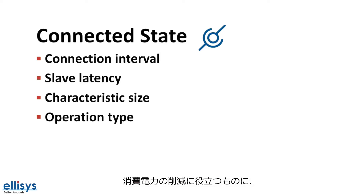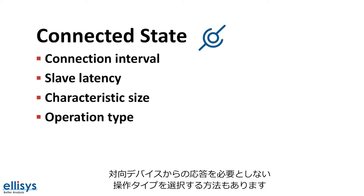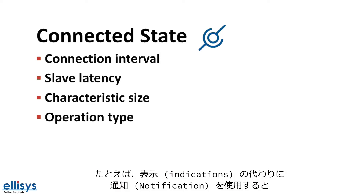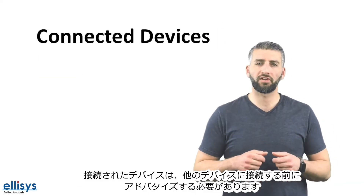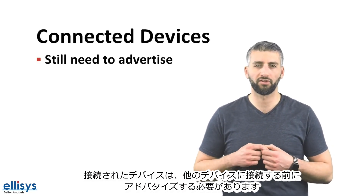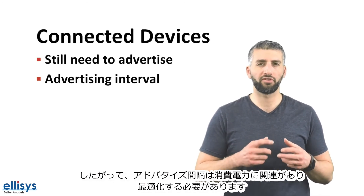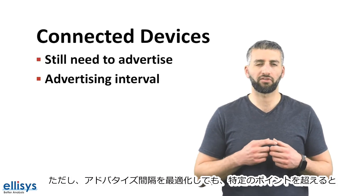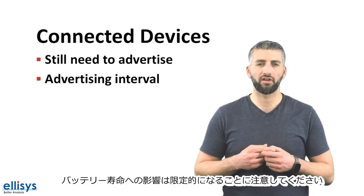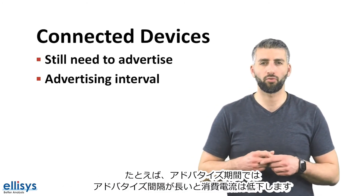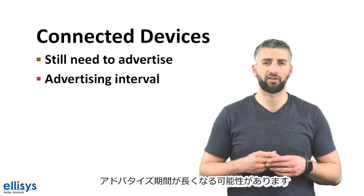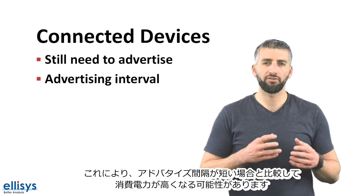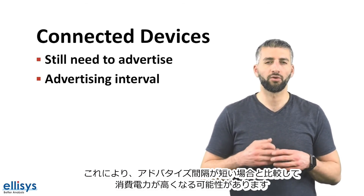Another aspect that helps reduce power consumption is choosing an operation type that doesn't require a response from the other side. For example, choosing write without response or notifications instead of indications can help reduce power consumption because it does not require the other side to send back a confirmation or acknowledgement packet. Connected devices still need to advertise before getting connected to other devices, so the advertising interval is still relevant and needs to be optimized. However, keep in mind that optimizing the advertising interval will have a limited impact on battery life beyond a certain point. For example, lowering current consumption during the advertising state may cause the central to take longer to discover the device, leading to longer advertising periods and potentially higher overall power consumption.